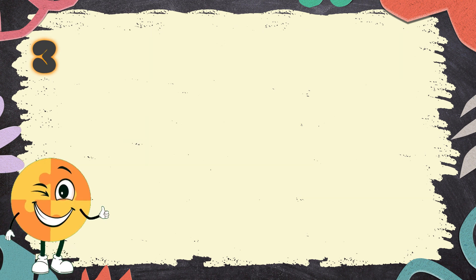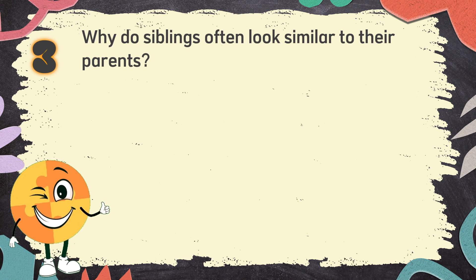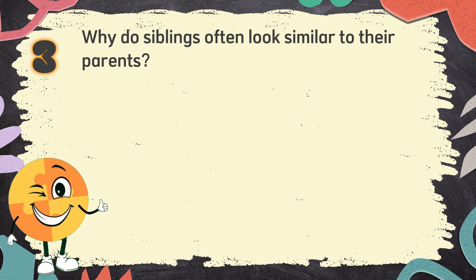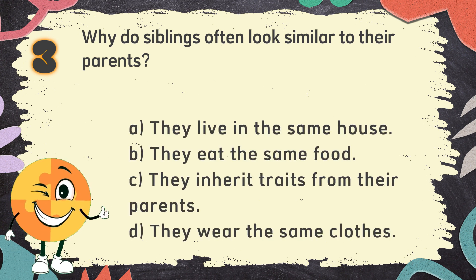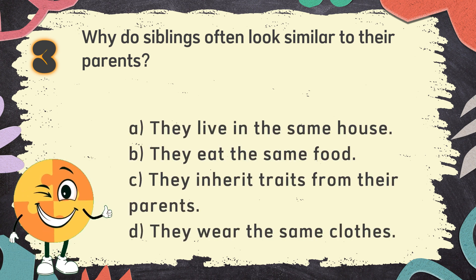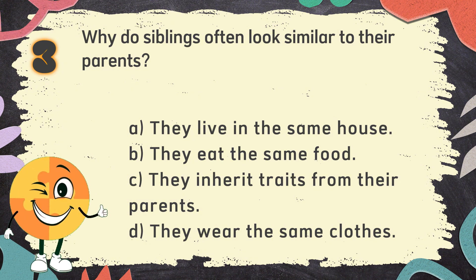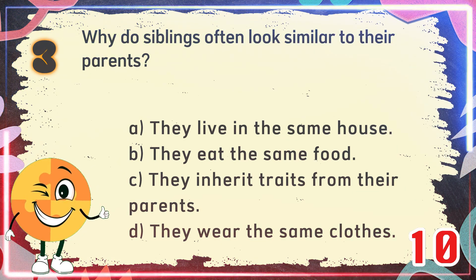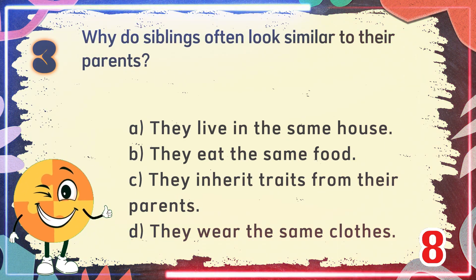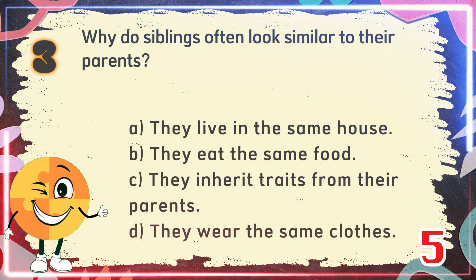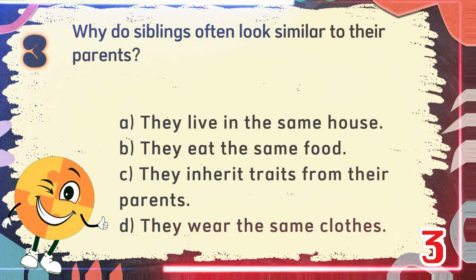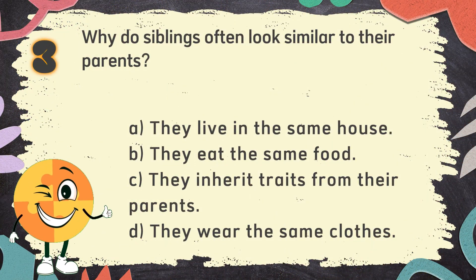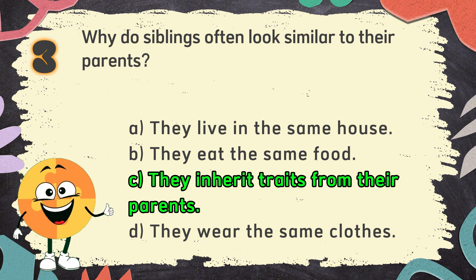Number 3. Why do siblings often look similar to their parents? The choices are A. They live in the same house, B. They eat the same food, C. They inherit traits from their parents, D. They wear the same clothes. The correct answer is C. They inherit traits from their parents.